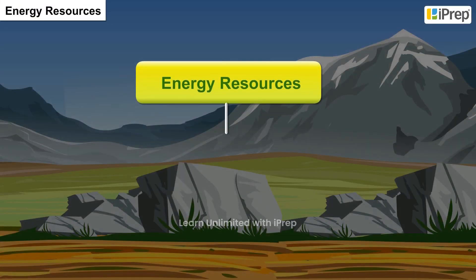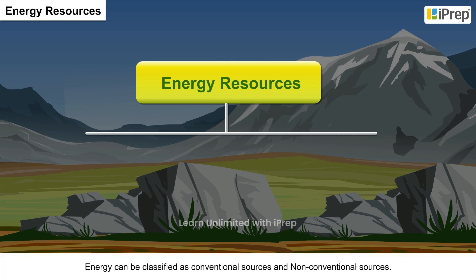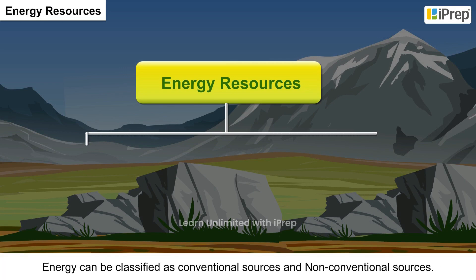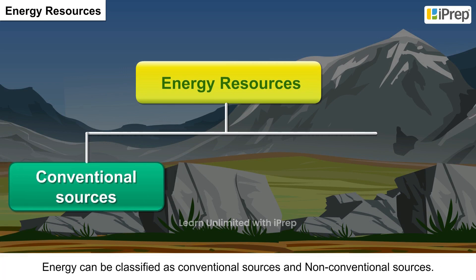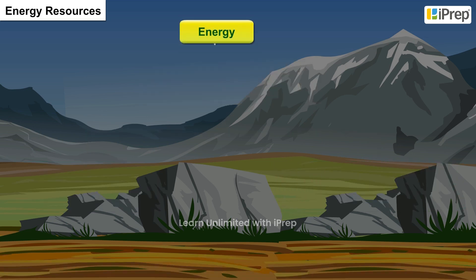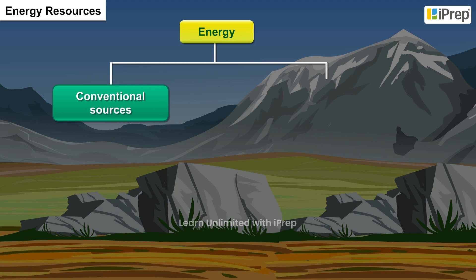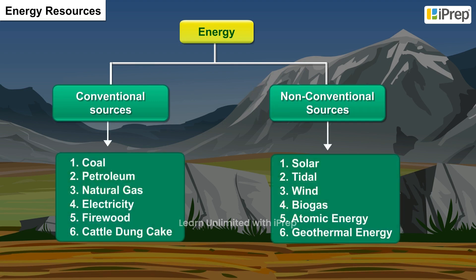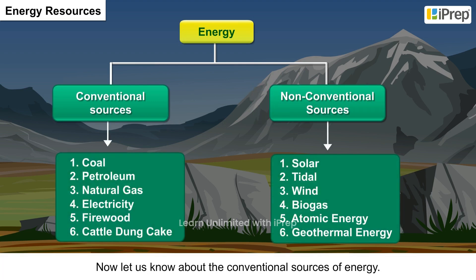Energy resources. Energy can be classified as conventional sources and non-conventional sources. The given flowchart represents both types of energy sources. Now let us know about the conventional sources of energy.